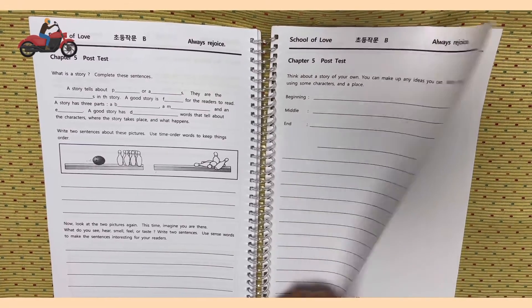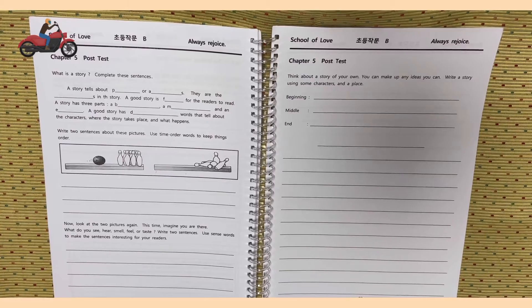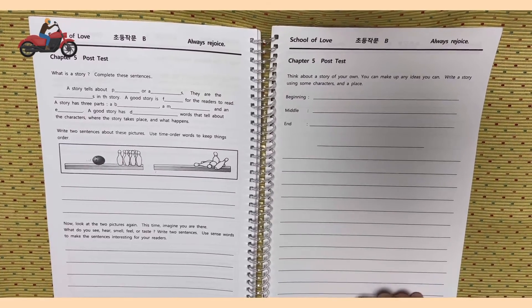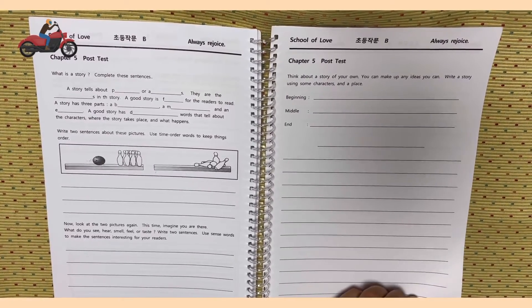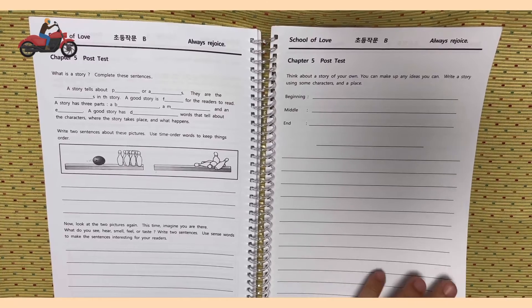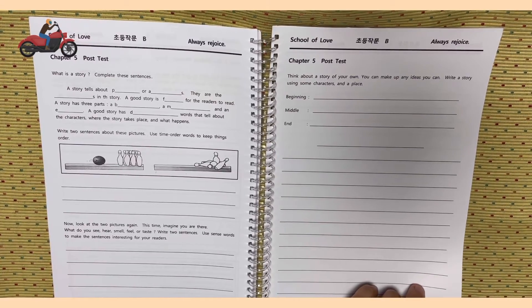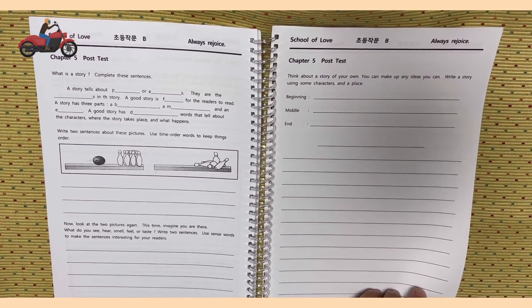Page 97, Chapter 5 Post-Test. Think about a story of your own. You can make up any ideas you can. Write a story using some characters and a place, beginning, middle, end, and a title.